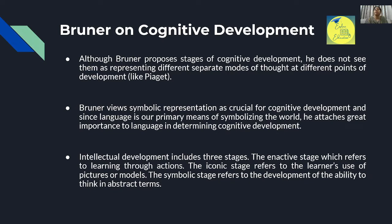Language is crucial for cognitive development. Since language is our primary means of symbolizing the world — we name things and communicate through it — Bruner attaches great importance to language in determining cognitive development. Bruner says there are three stages of intellectual or cognitive development, but these stages are not in a strict sequence the way Piaget describes.